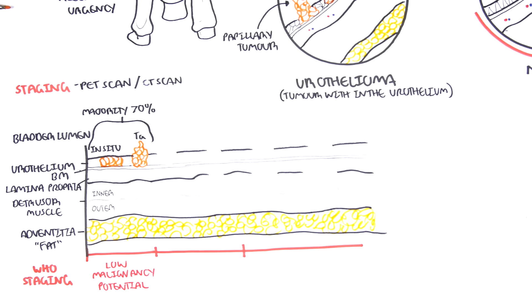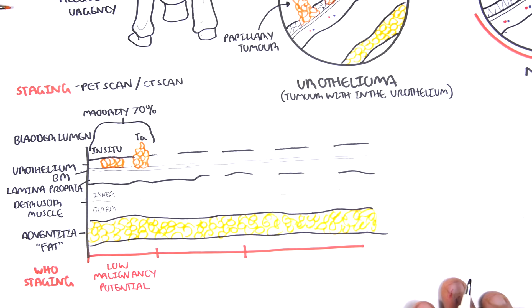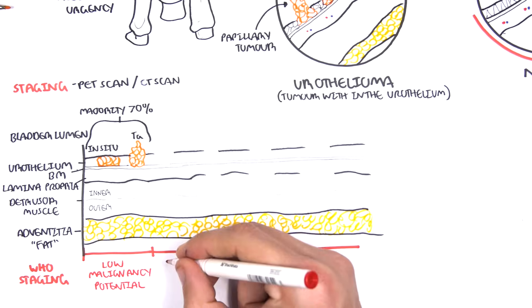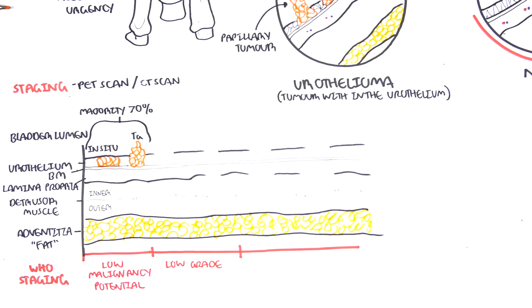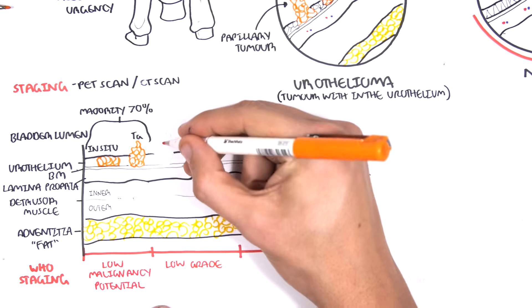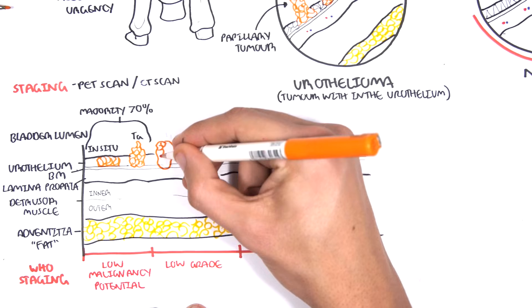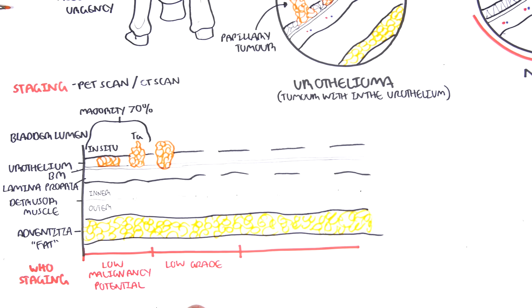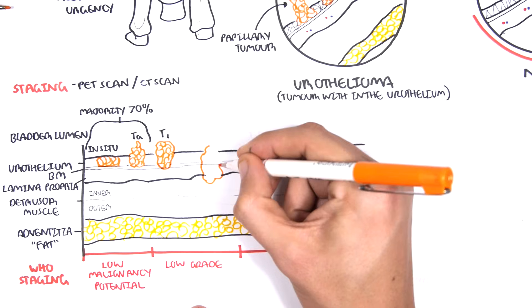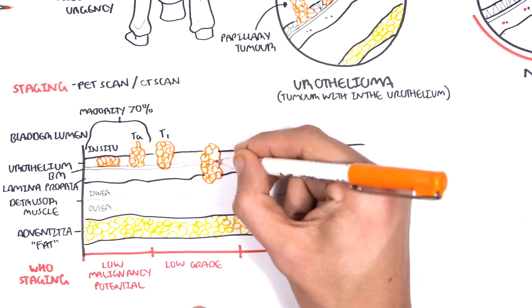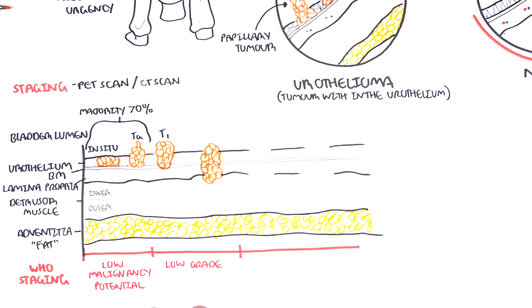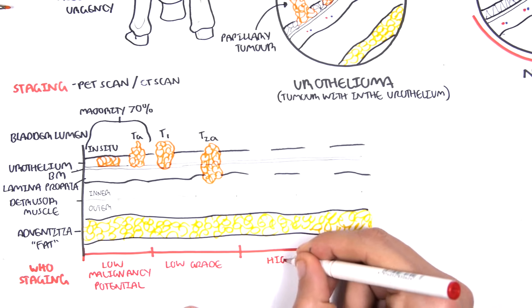After low malignancy potential, the World Health Organization has the low grade stage, which is where the bladder tumor has grown to the deeper layers, and this is T1. T1 involves the growth reaching the basement membrane and the lamina propria. There's T2a, where the tumor goes past the lamina propria and invades the superficial muscle layer.